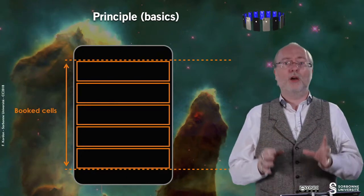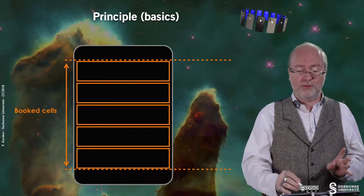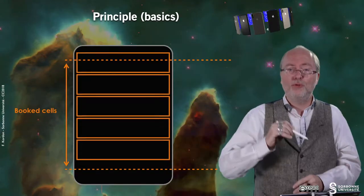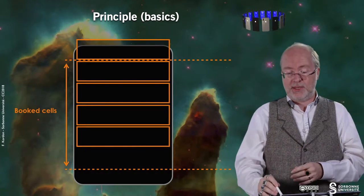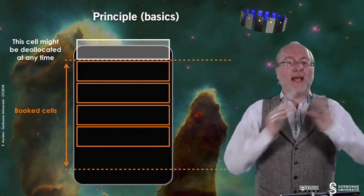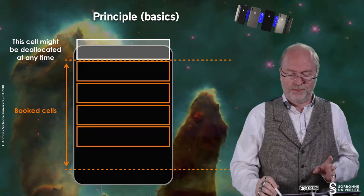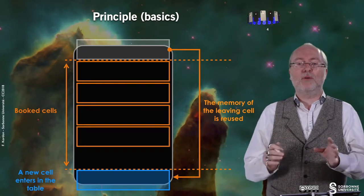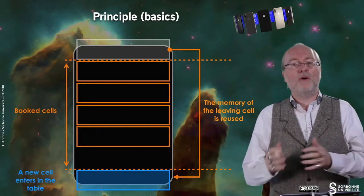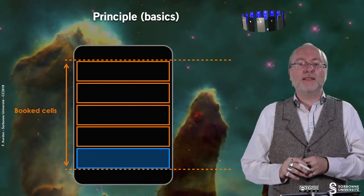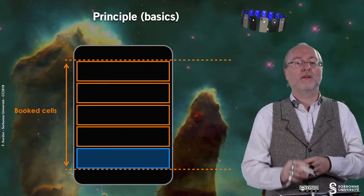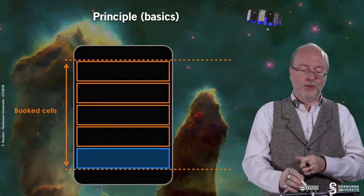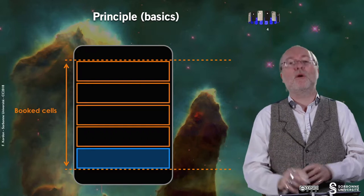Let's look at this principle in a basic situation. You have your device with a set of visible cells. These cells are booked and cannot be deallocated. When you perform a scroll gesture, one cell gets out of the visible zone and might be deallocated at any time, but it is in the temporary zone first. Similarly, one cell is ready to enter. At that point, there may be memory left from the cell that just left, so instead of allocating a new cell, you reuse the one that went out. It's not exactly instantaneous — the entering cell may need allocation — but once the previous cell is fully out, the next one that enters is reused.